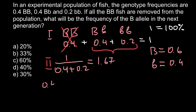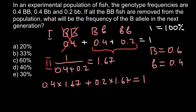So 0.4 multiplied by 1.67 plus 0.2 multiplied by 1.67 should equal 1. Multiplying 0.4 by 1.67 gives 0.668, and multiplying 0.2 by 1.67 gives 0.334. Adding these two numbers gives a result close to 1. It is not exactly 1 because 1.67 is a rounded number, but it is still a very close approximation.